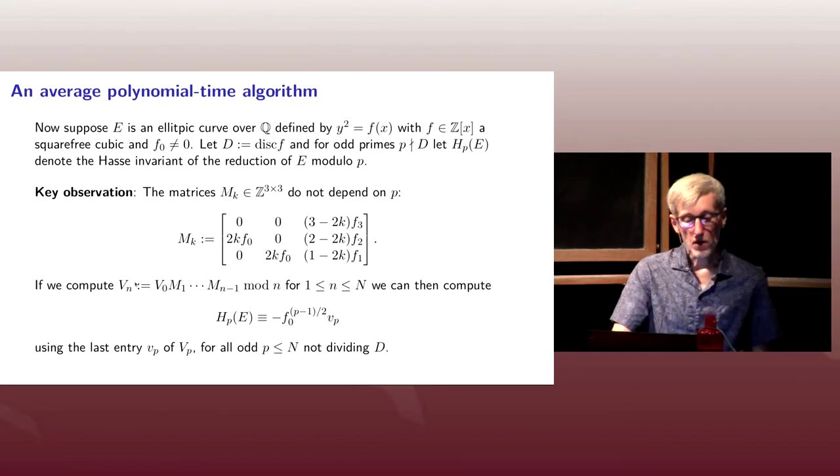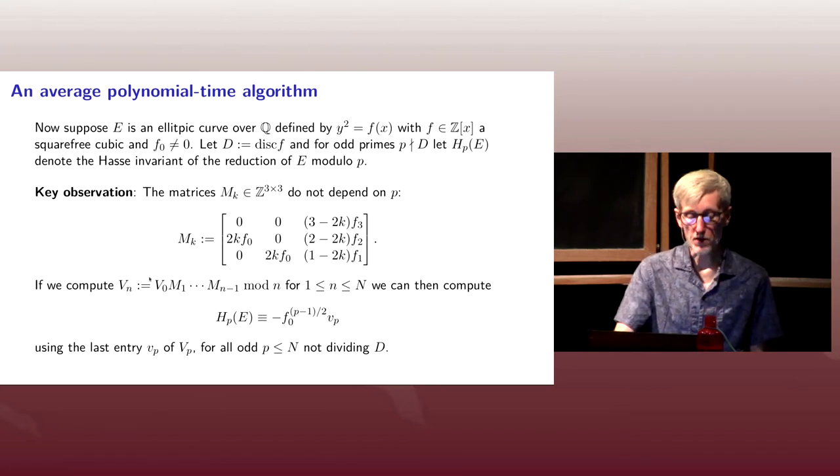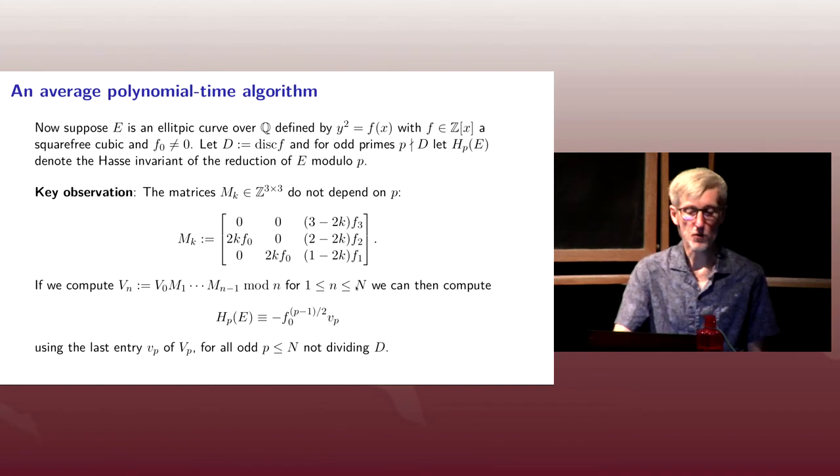And if we could compute all of the products of V sub naught times M sub 1 up to M sub N minus 1 modulo N for N running from 1 to N, we could compute all of the Hasse invariants we want.